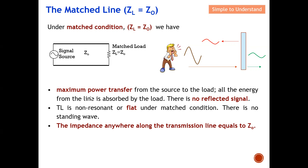This is why we need maximum power transfer — we want to deliver all the signal to the load. We do not want reflection, because once we have reflection, the power is lost, which is undesired. Under match condition, we want 100% of the power delivered from source to load. The transmission line is non-resonant; under match condition there is no standing wave. The impedance anywhere along the transmission line is equal to Z0.